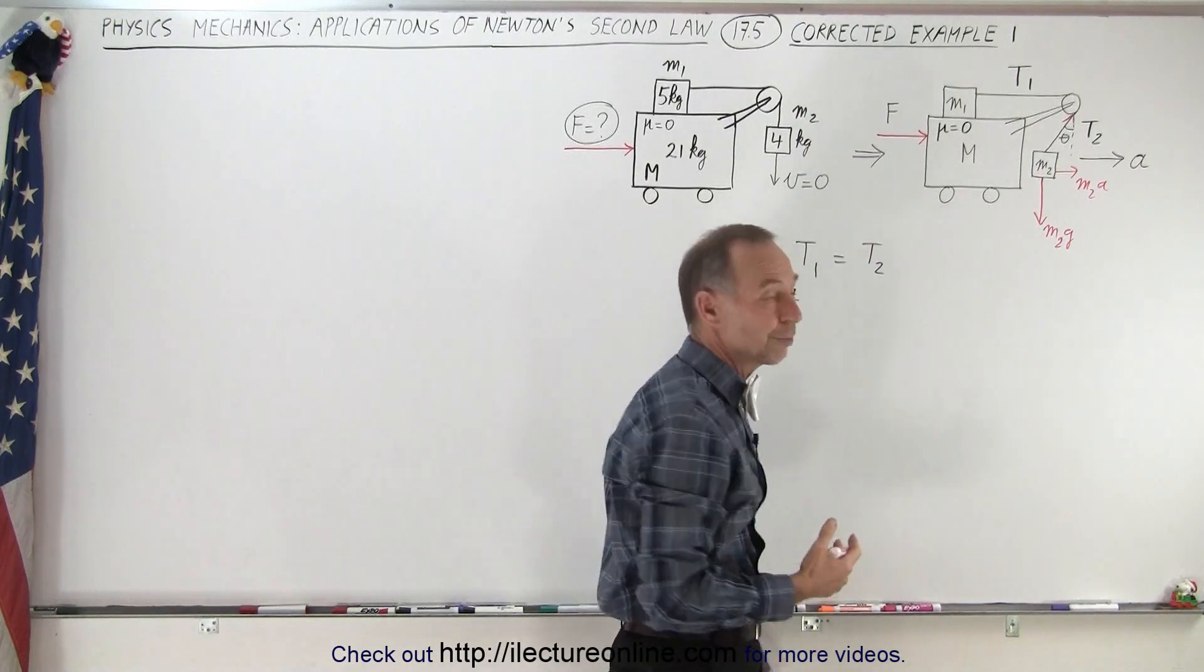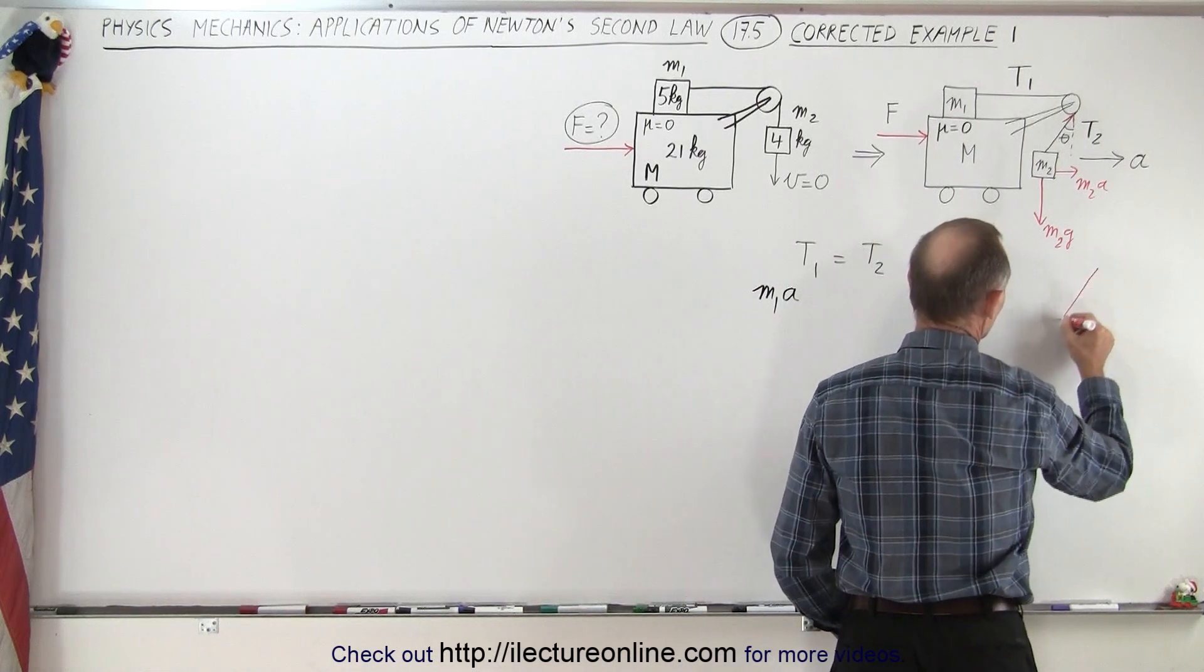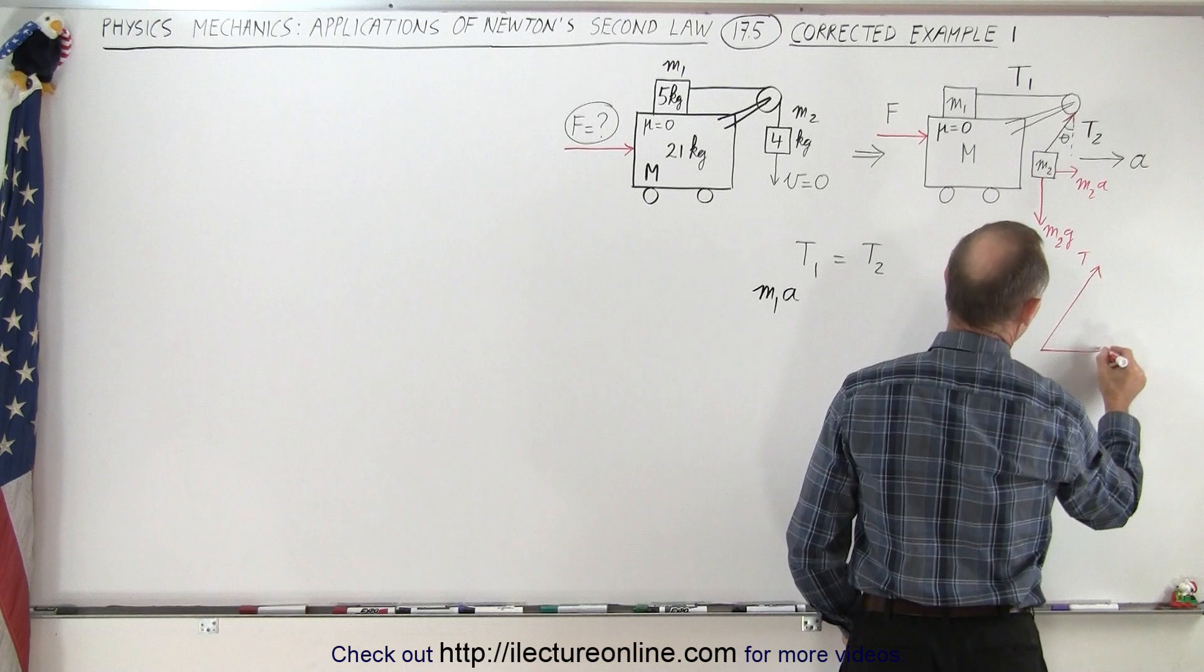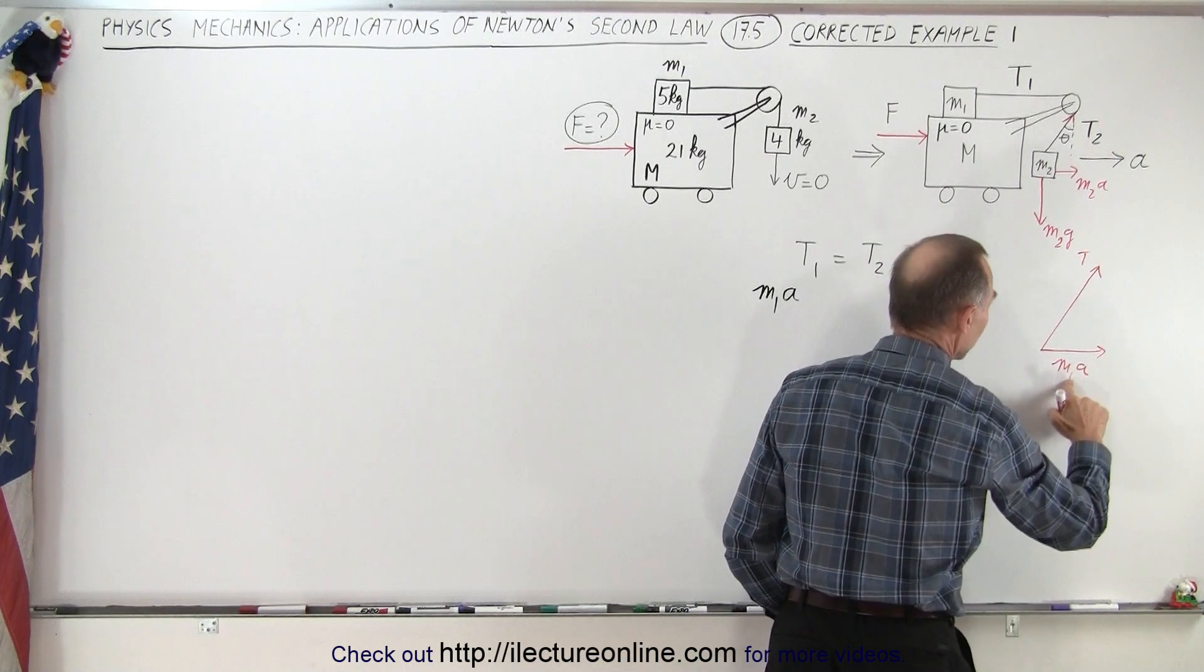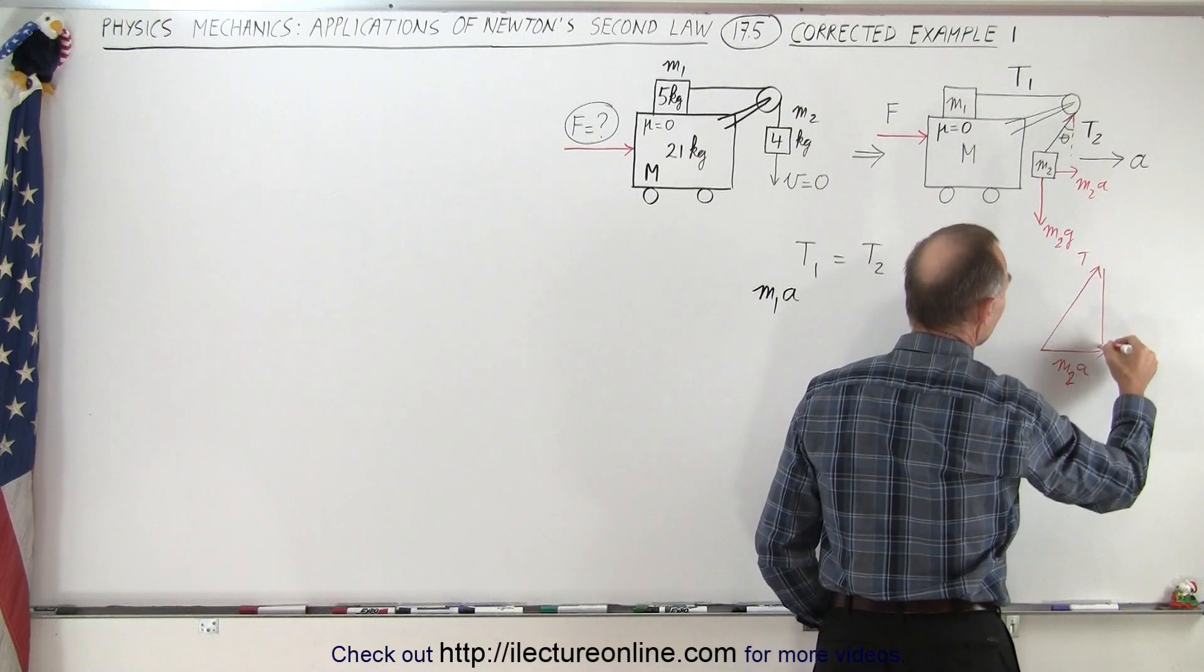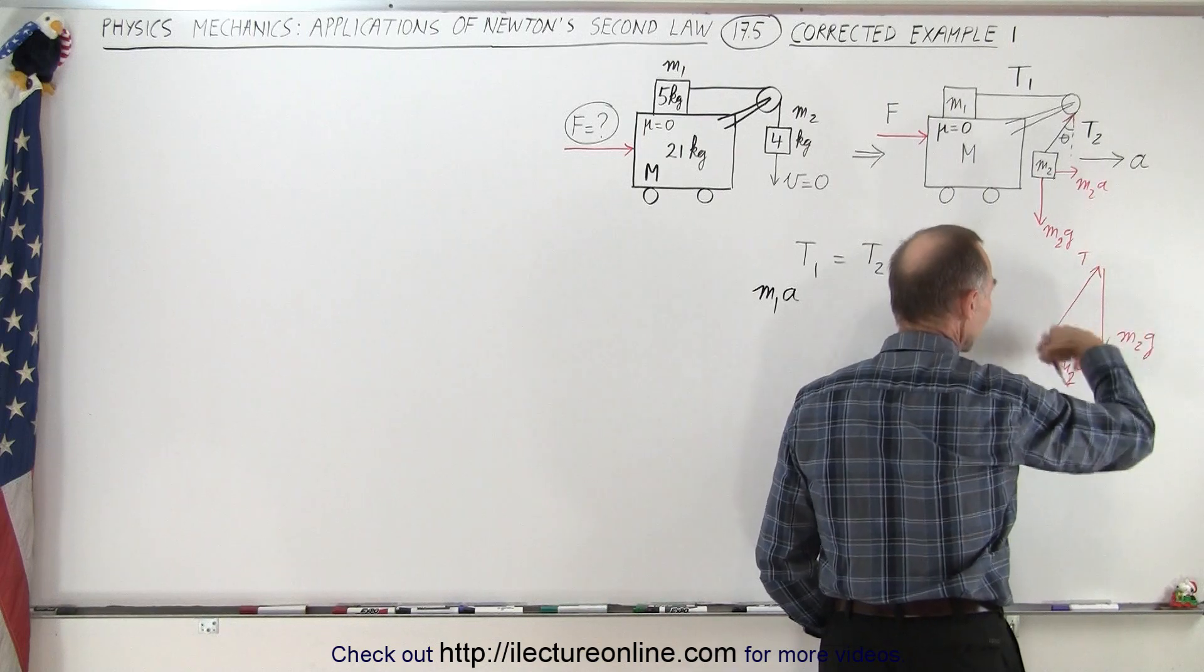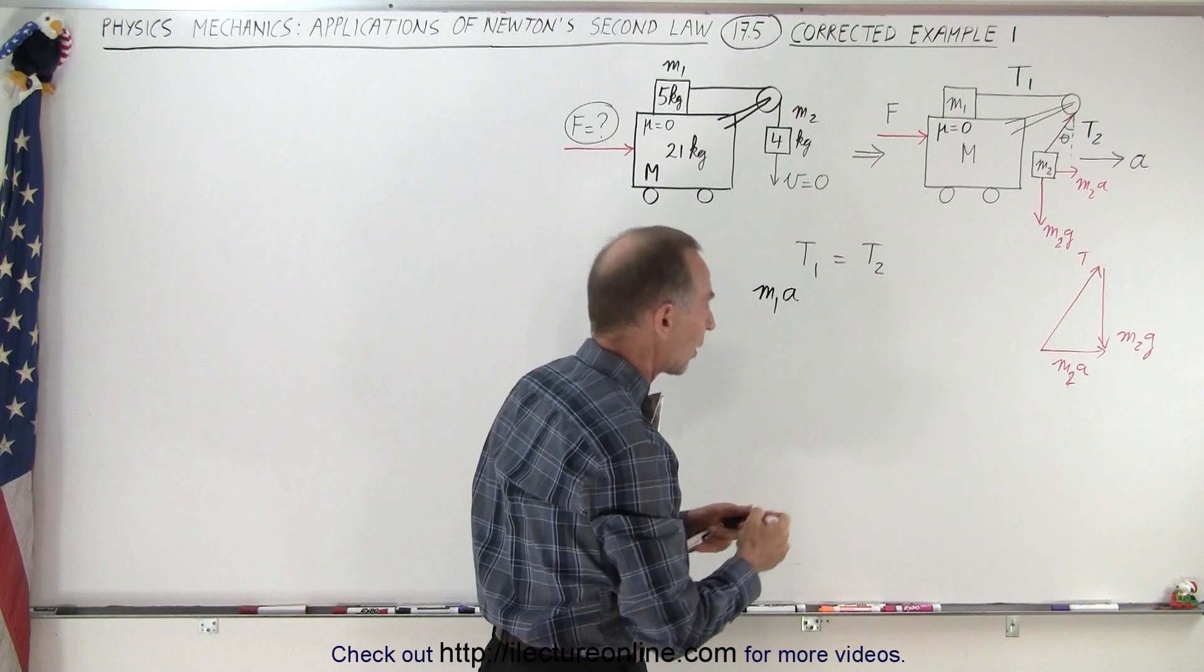then we can say that the sum of those three forces must add up to zero. In other words, we have the tension in this direction, we have the mass times acceleration m2a in this direction, and then we have the m2g in this direction. Those three forces then must add up to zero if that mass does not come crashing down.